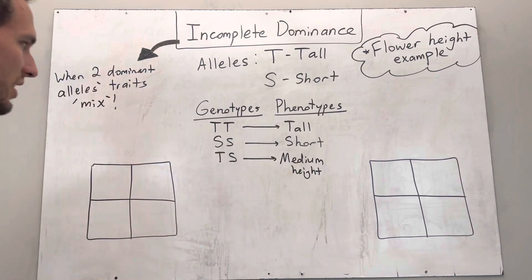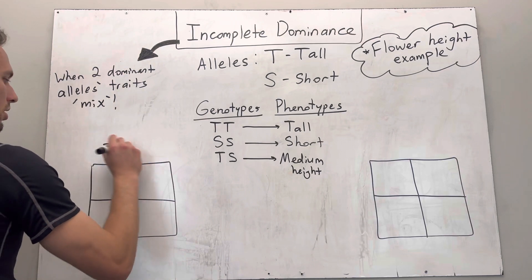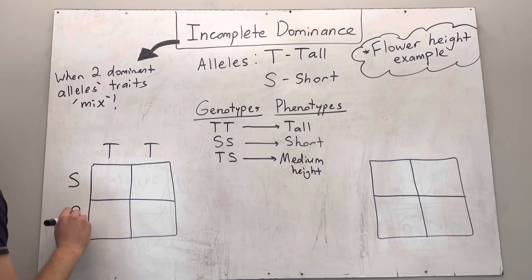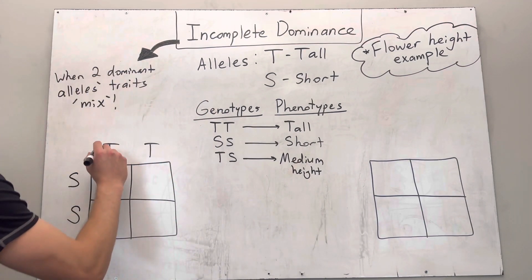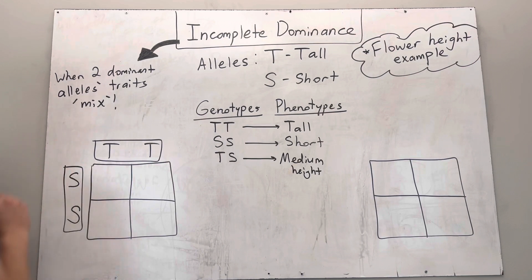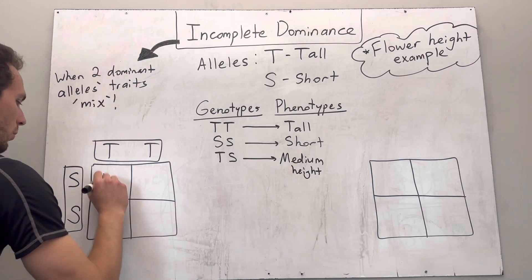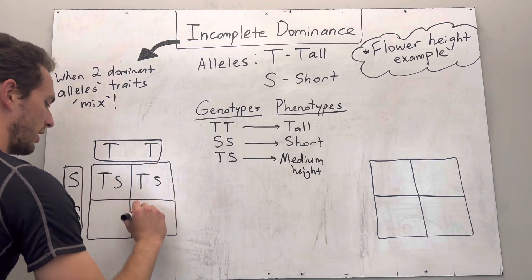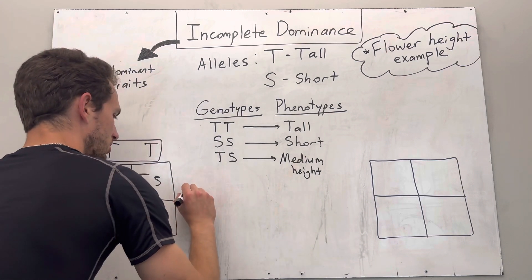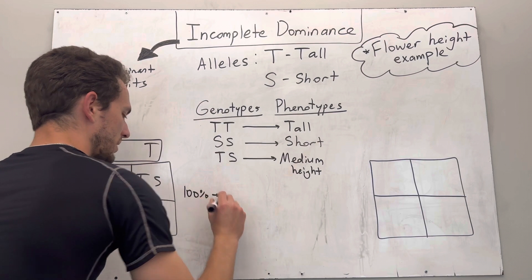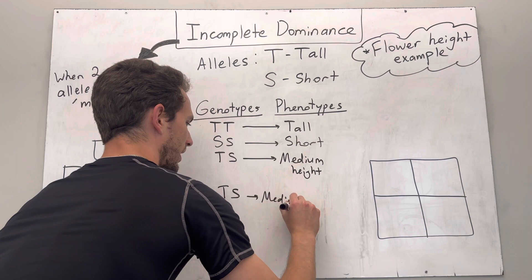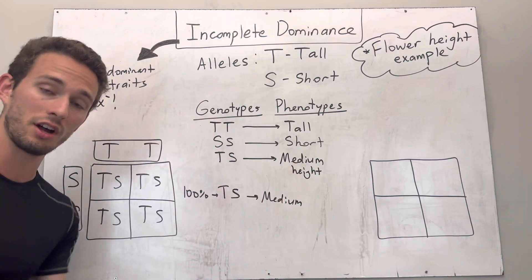Let's use an example. Let's say we've got a tall plant, homozygous dominant, and a short plant, and we're going to cross them together. This is plant number one, separated out its alleles. This is plant number two, separated out its alleles. What could we get? All of the offspring will be big T, big S — so 100% will be TS — and what's that going to code for? A medium height plant.